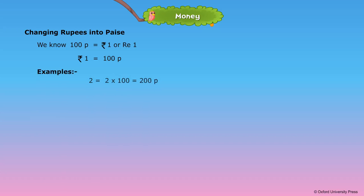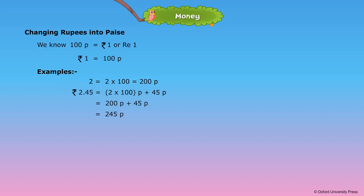Examples. Rupees 2 is equal to 2 into 100, that's equal to 200 paise. Rupees 2.45 is equal to 2 into 100 paise plus 45 paise, that's equal to 200 paise plus 45 paise, that's equal to 245 paise. Important: to convert rupees into paise, we multiply rupees by 100.